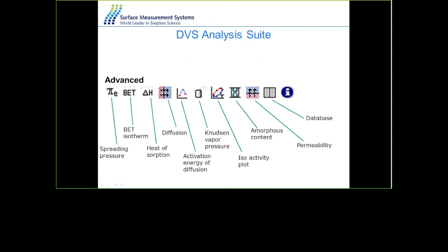Additional macros include vapor pressure for measuring vapor pressure of solids, and the isoactivity plot for maintaining relative humidity constant while changing temperature. The amorphous content macro is popular for pharmaceutical and food materials for monitoring amorphous content, and the mobility macro is designed for packaging materials.